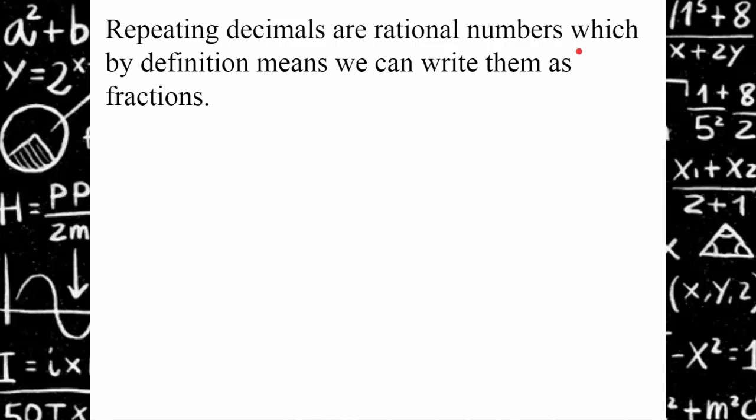A rational number is a number that can be written as the ratio of two integers, which is a fraction. So 0.3 repeating is a real number, and it's rational.